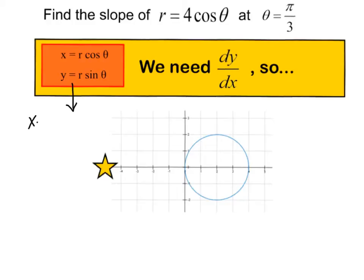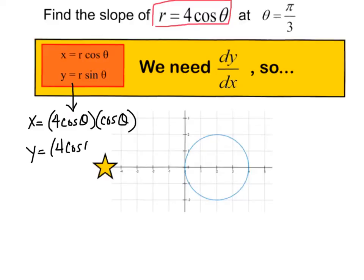Remember that x equals r cosine theta. Well, for us, r is 4 cosine theta. So I'm going to do a little substitution. I'm going to have 4 cosine theta multiplied by cosine theta. Just make sure you see that. I just replaced r with what r was equal to. So r cosine theta. So y is r sine theta, and now I know what x and y are equal to.